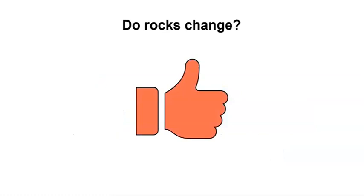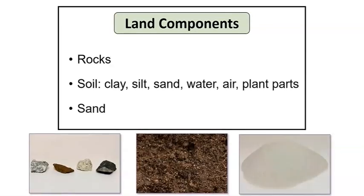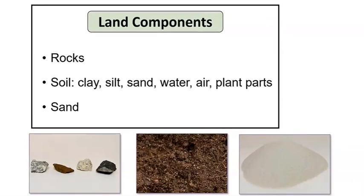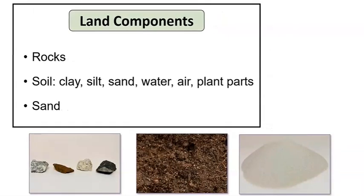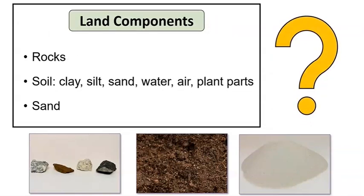If you gave a thumbs up, you're right! Rocks can change. During our last lesson, we learned that land has different components: rocks, soil, and sand. I wonder if some smaller components of land, such as sand, come from bigger rocks. I also wonder if all the components of land are different sizes of rock.